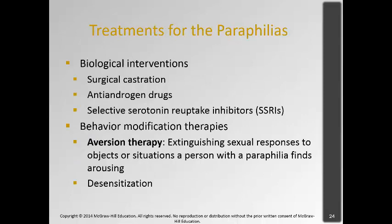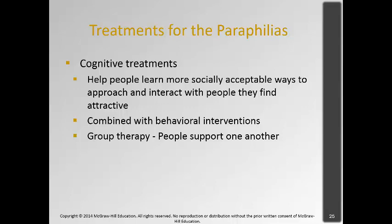Treatments for paraphilias — primarily for sex offenders — include biological interventions such as surgical castration, antiandrogen drugs to decrease testosterone levels, and SSRIs which decrease libido. Behavioral modification therapies include aversion therapy, pairing the desired stimulus with a noxious smell at the point of arousal so it becomes associated with negative feelings. There's also desensitization through repeated orgasm to the stimulus until it loses appeal. Cognitive therapies help people learn more socially acceptable ways to interact with people they find attractive. These treatments for sex offenders are generally done in group therapy sessions.